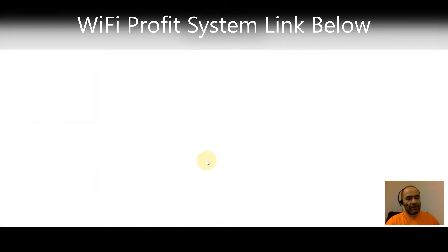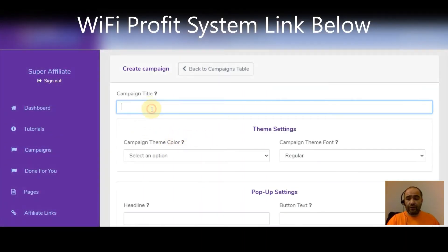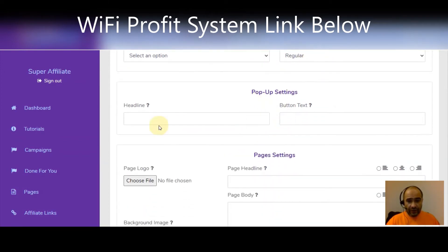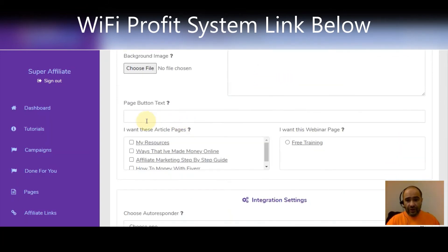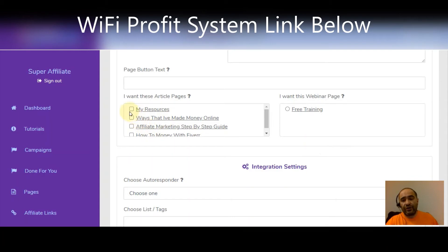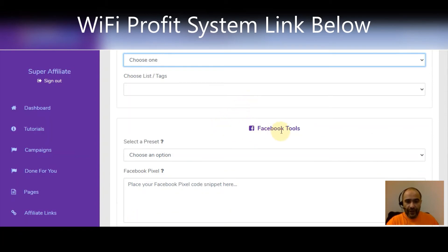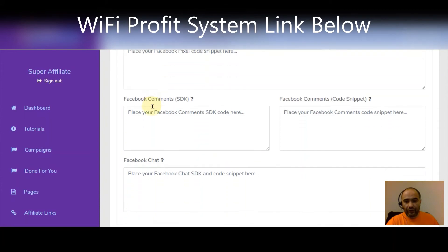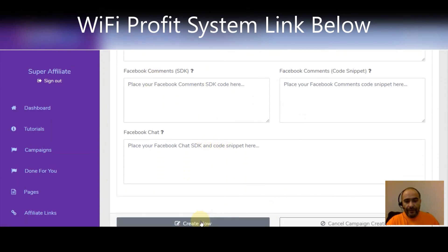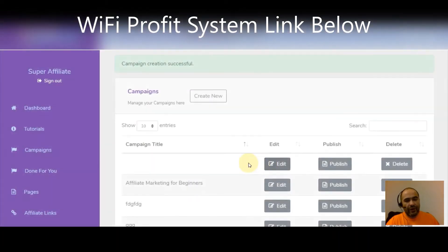Real quick, let me show you how easy it is to create a campaign. You just click 'Create New,' give it a title, choose a color, campaign font, pop-up settings, headline, page customizations, button text, article content, and webinar integration settings. For your autoresponder you just choose which one — it looks like it can integrate with any of them, even Sendiio which is my favorite, and even Mailchimp for a free option. Then you've got your Facebook tools: put your pixel in, set up comments and Facebook chat, then just hit create.